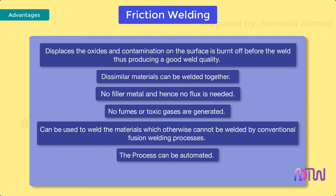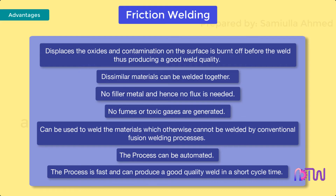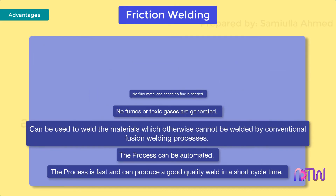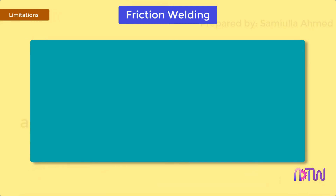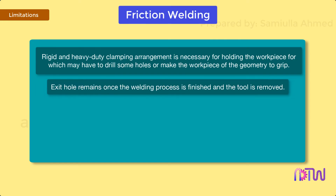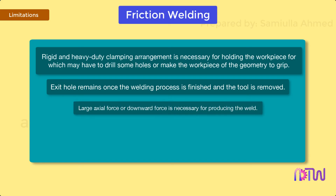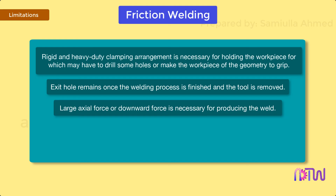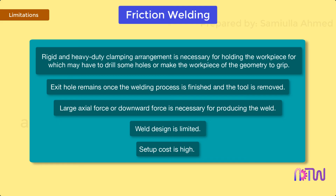The process can be automated and is fast, producing good quality welds in a short cycle time. Limitations: rigid and heavy duty clamping arrangements are necessary for holding the workpiece, which may require drilling holes or modifying workpiece geometry. An exit hole remains once the welding process is finished and the tool is removed. A large axial force is necessary for producing the weld. Weld design is limited, and setup cost is high.